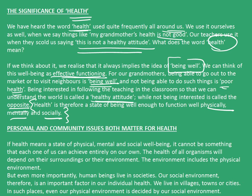Personal and community issues both matter for health. If health means a state of physical, mental, and social well-being, it cannot be something that each one of us can achieve entirely on our own. The health of all organisms will depend on their surroundings and their environment. The environment includes the physical environment. But in particular, if we talk about human beings, we live in societies. Our social environment, therefore, is an important factor in our individual health. We live in villages, towns, or cities. In such places, even our physical environment is decided by our social environment.